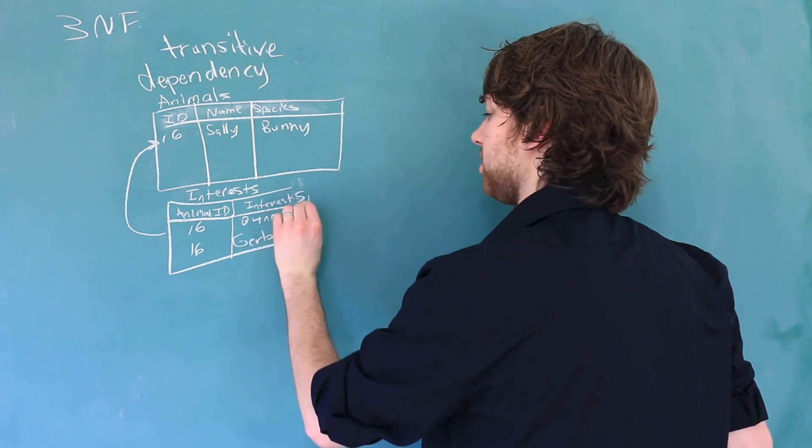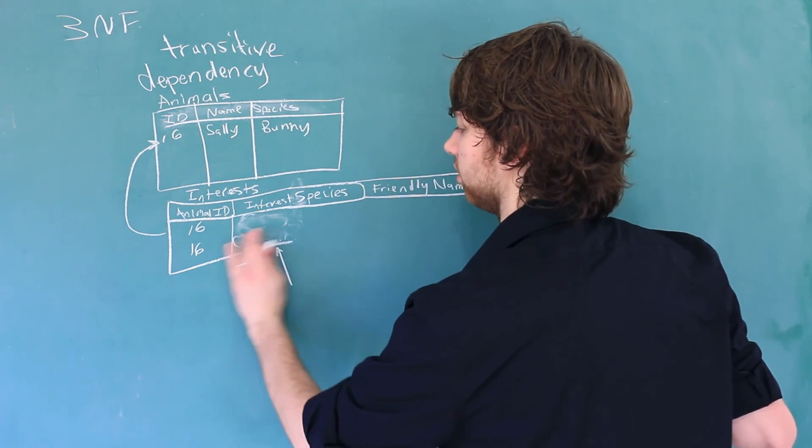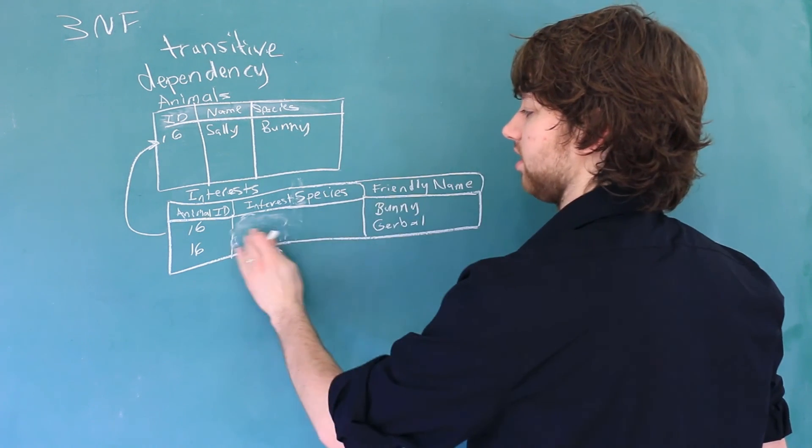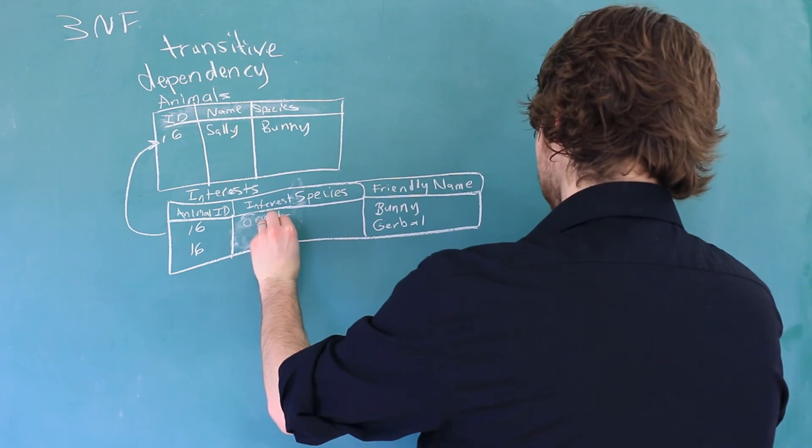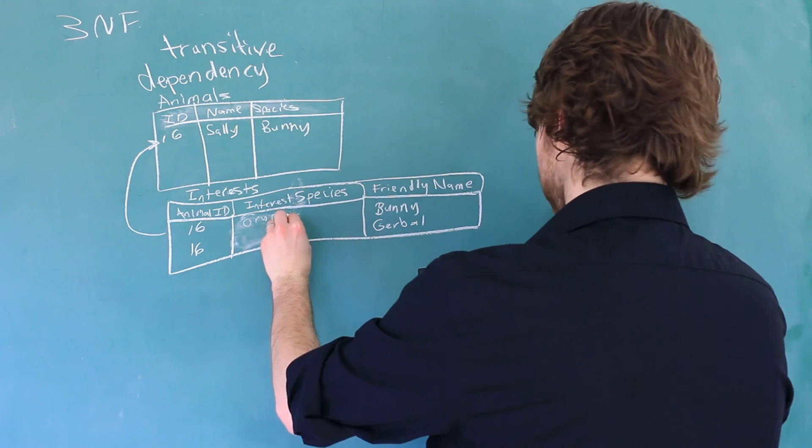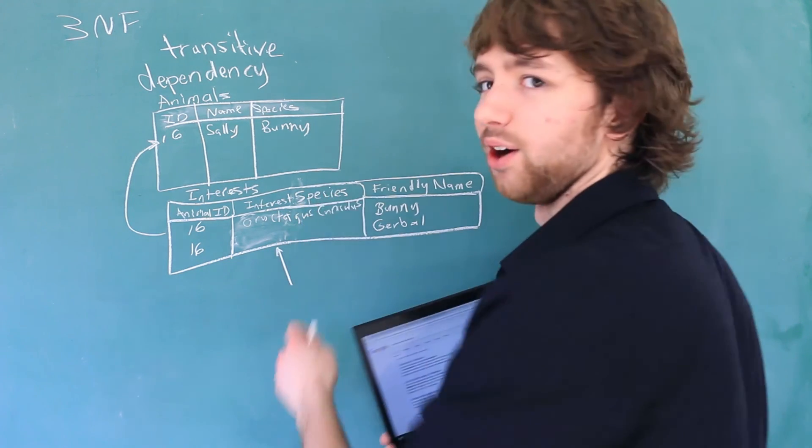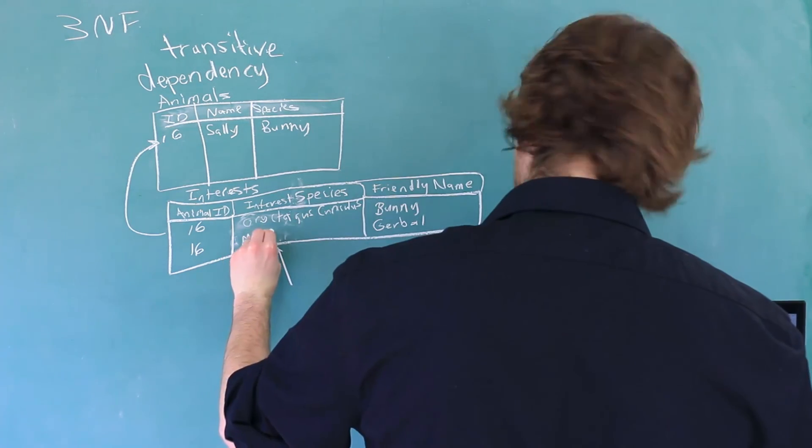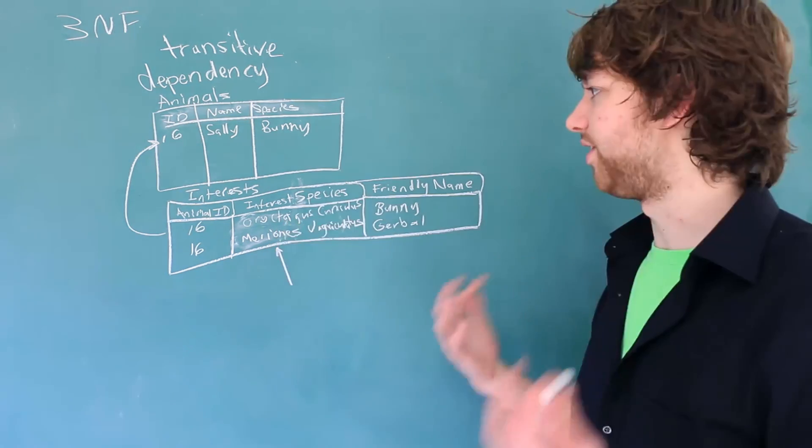And we'll say interest species, then we'll say the friendly name. So we can move these friendly names over here to this column. Then in here we can put some crazy scientific names. Oh, my biology teacher would be so proud. And there we go.